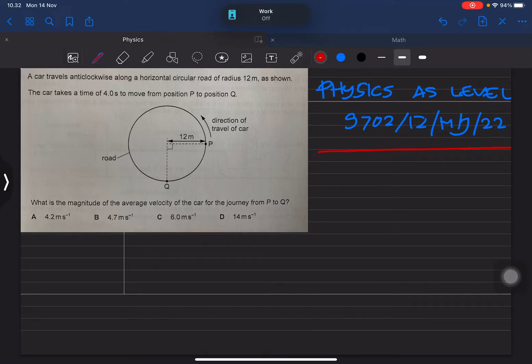Hello, welcome back to my YouTube channel. Today I'm going to show you how to solve a question in Paper 1/2 on May/June 2022. Let's check: a car travels anti-clockwise along a horizontal circular road of radius 12 meters.